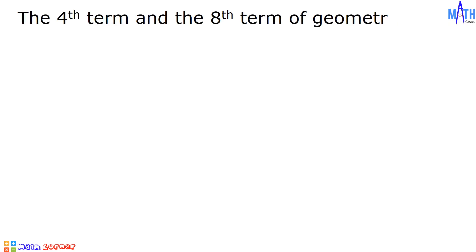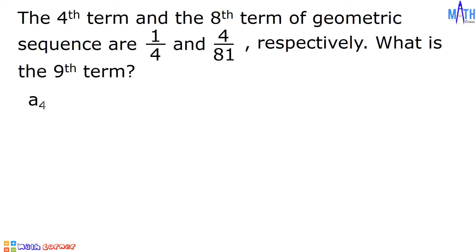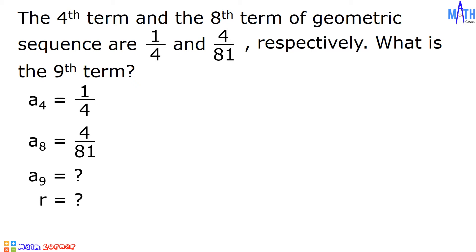Next example: the fourth term and the eighth term of a geometric sequence are 1/4 and 4/81 respectively. What is the ninth term? A sub 4 equals 1/4, A sub 8 equals 4/81, A sub 9 is unknown, and the common ratio is also unknown.